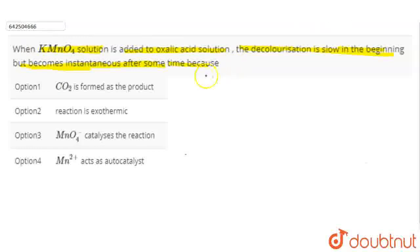So, let's find out. When KMnO4 is added to oxalic acid, then it oxidizes oxalate ions to carbon dioxide, that is CO2. So, because in this reaction, KMnO4 acts as an oxidizing agent and oxalic acid acts as a reducing agent.